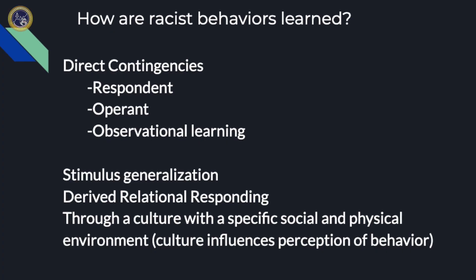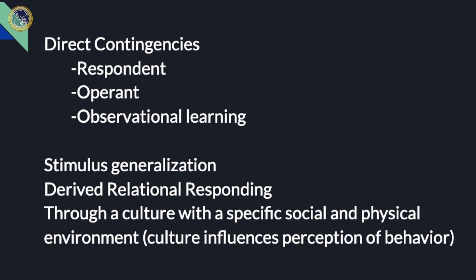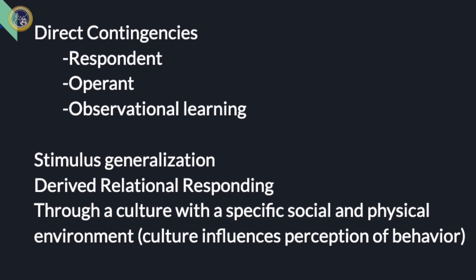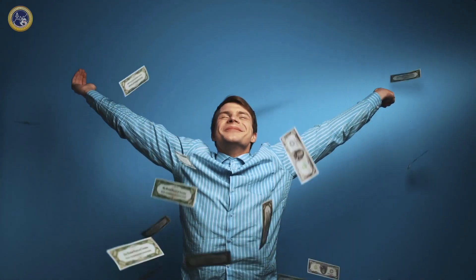The next concept is stimulus generalization. If there's a television show where all the white characters are rich and all the black characters are poor, someone might generalize that to: all white people are rich and all black people are poor. You'd actually be surprised if you met a white person who's poor or a black person who's rich, because you've generalized from that TV show that that's how things are.